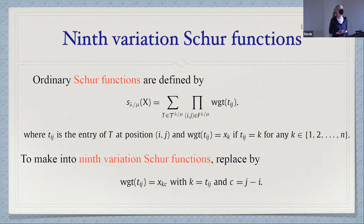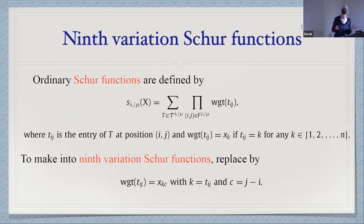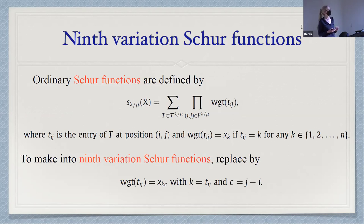Content is really important for the ninth variation Schur functions. For ordinary Schur functions, you take the tableau and weight by X subscripted by whatever entry K is in the box. For the ninth variation Schur functions, you weight by X with a double subscript: by the entry K in the tableau box, but also by the content. So it has a sort of double subscript — entry and content.